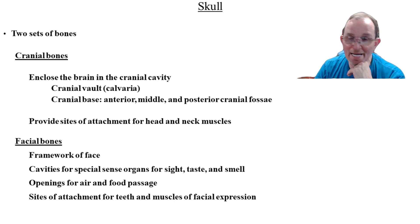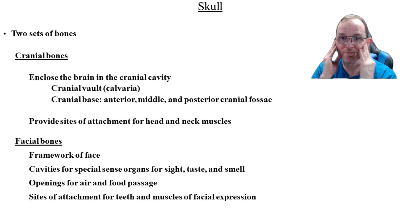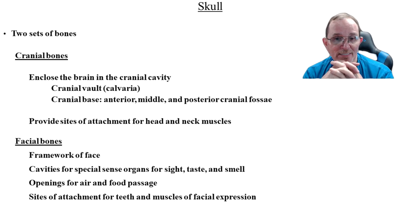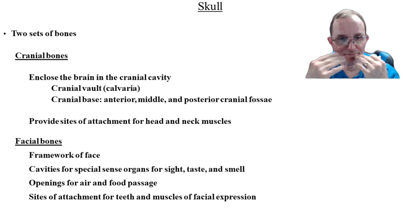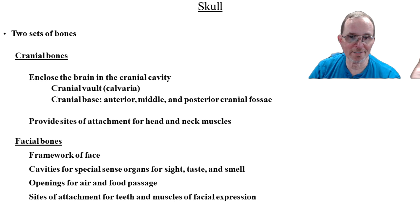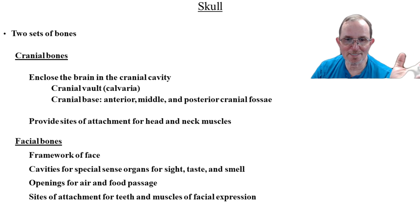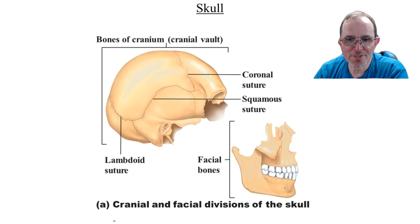The cranial bones have markings on them that help give us a place for the muscles to attach, and we'll talk more about that coming up. Facial bones are going to form the frame that the muscles and the skin of your face attach to. We're going to have certain holes for sight, taste, and smell — holes for our eyes, nose, and mouth — openings for the air and food passage. The facial bones also provide the attachment points for our teeth.